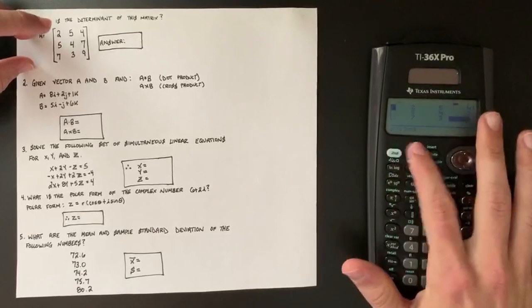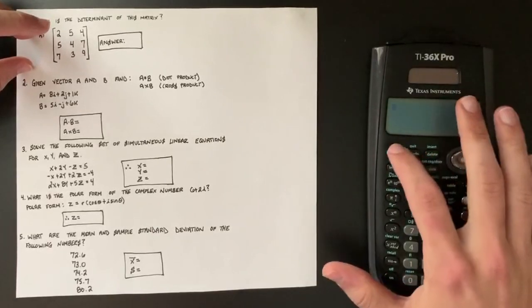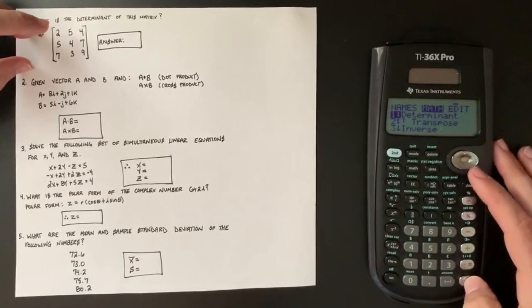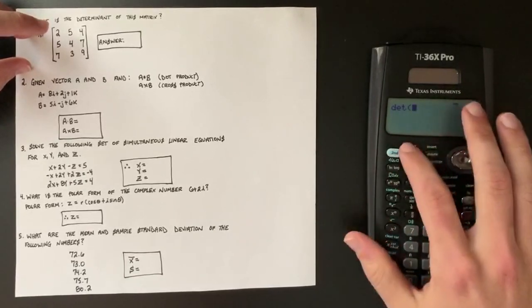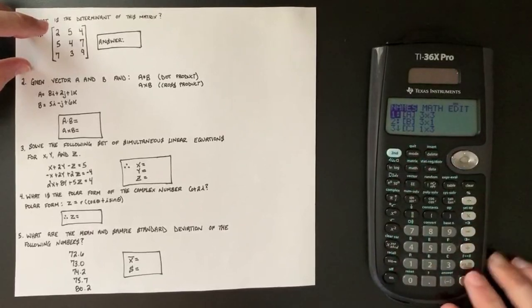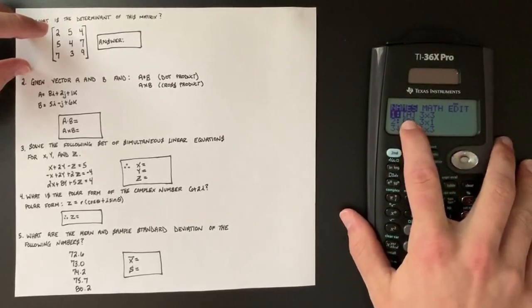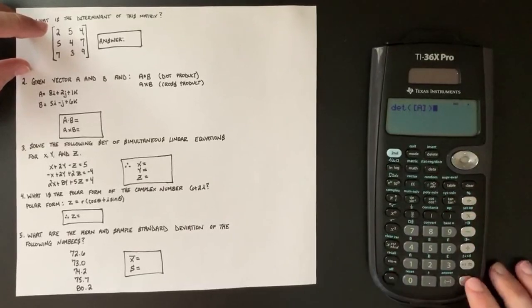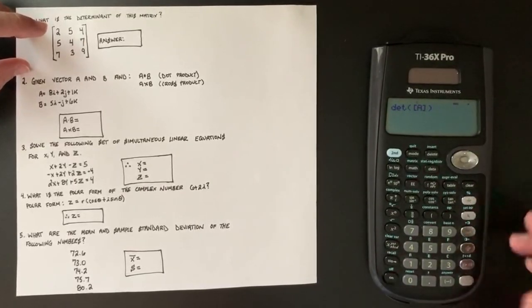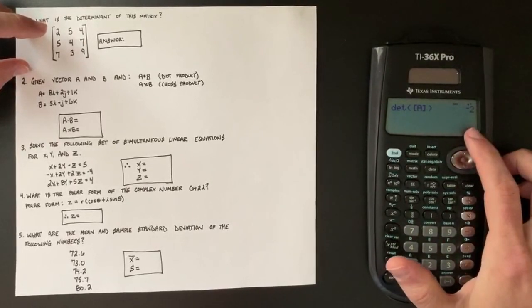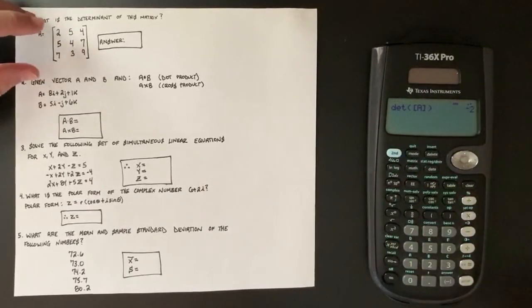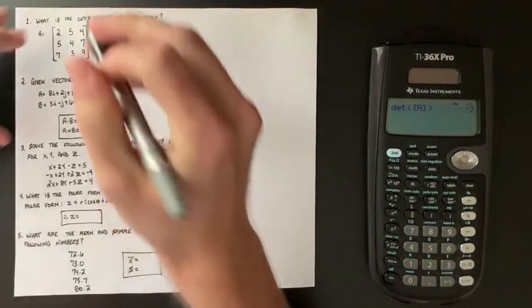In order to solve this, now you just go second quit and you go to second matrix and you go over to math and you do determinant. And now you go back to matrix, so second matrix. And now you go back to that matrix we just created A, you hit enter on it, close the parentheses and then hit enter. And it shows that the answer to that question is negative two. So the determinant of this three by three matrix is negative two.